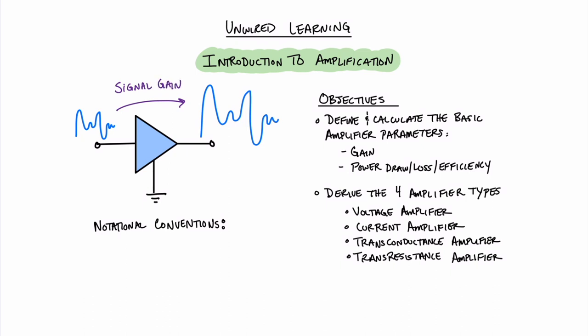We denote gain with the letter A and we can have all types of different gain. We can have voltage gain, A sub V. We can have current gain, A sub I. And we can have power gain, A sub P.